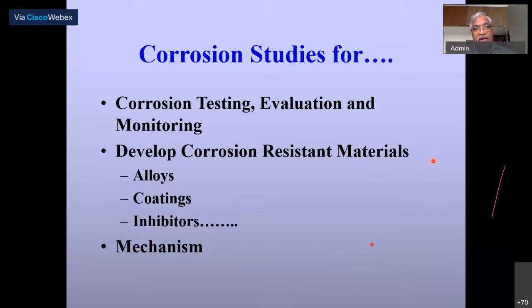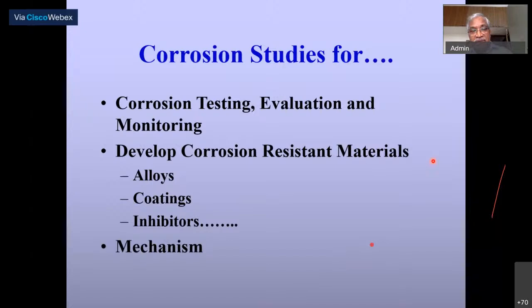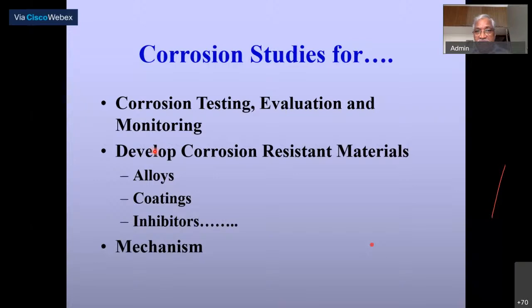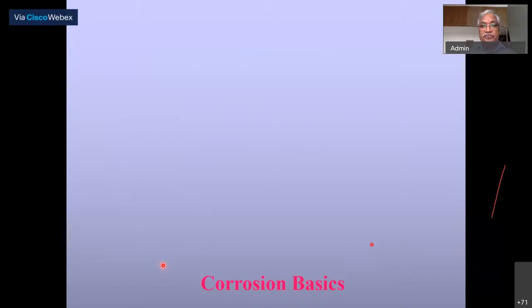When talking about corrosion studies, different people have different reasons to study. In industry, people talk about corrosion testing, evaluation, and monitoring — for which electrochemistry is very important. For those developing high corrosion-resistant materials, electrochemical techniques are equally essential, as they are for coatings — metallic or paint coatings — and inhibitors. Most importantly, from my perspective, electrochemical techniques are critical for understanding the mechanism of dissolution of metals. Today we are combining ourselves in relation to alloy development — focusing on how electrochemical techniques can be used to understand the mechanism of corrosion when you develop an alloy.